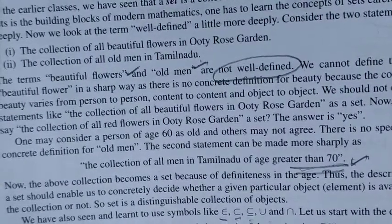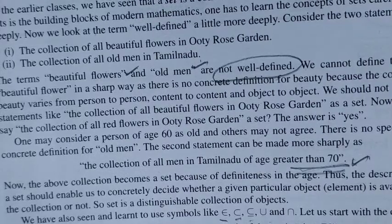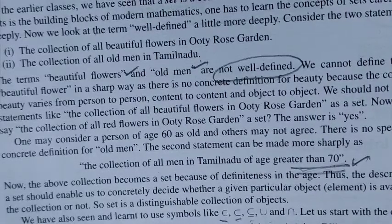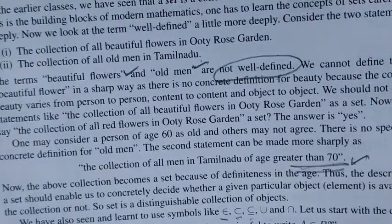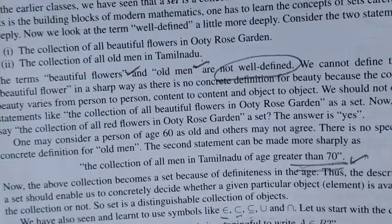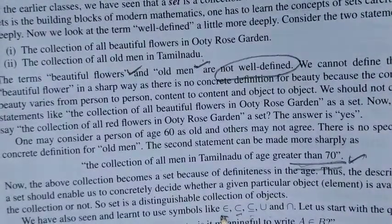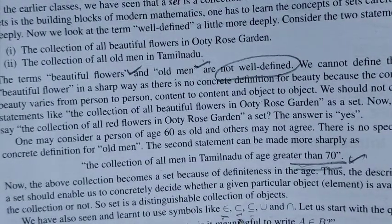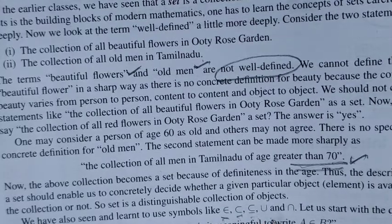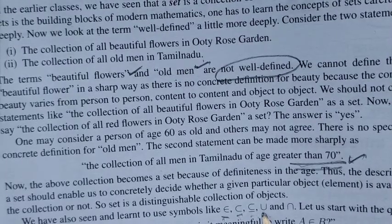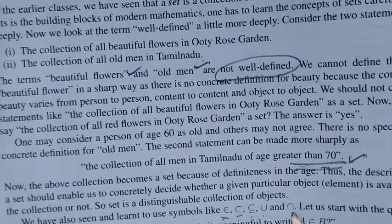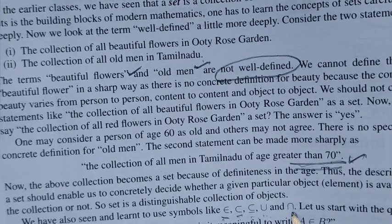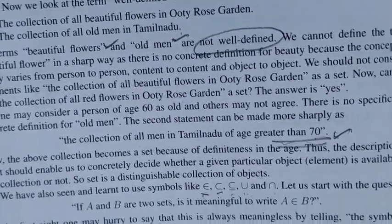If A and B are two sets, then it is meaningful to write A is a subset of B, or A is contained in B, or A is equal to B, or using the universal set, union, and intersection symbols. These are the symbols we have learned in the previous class.